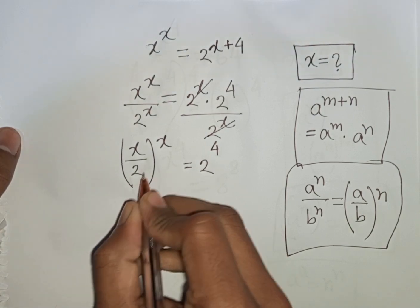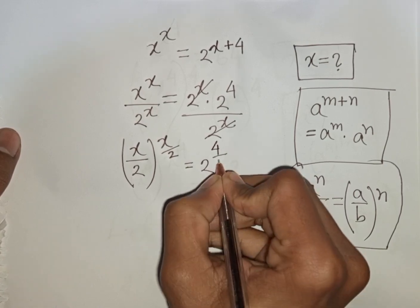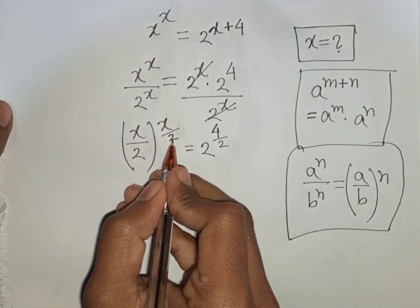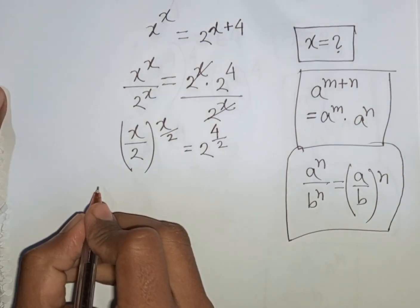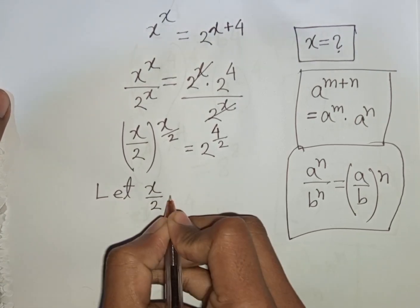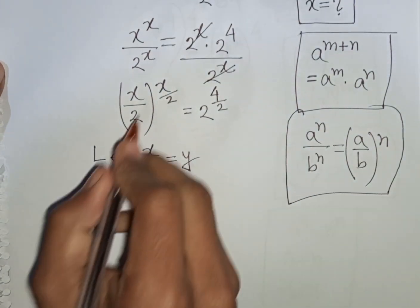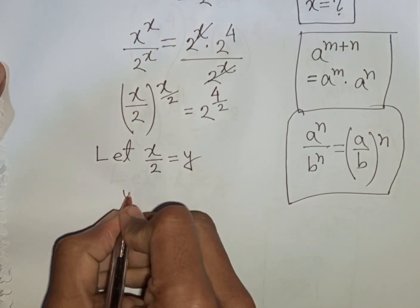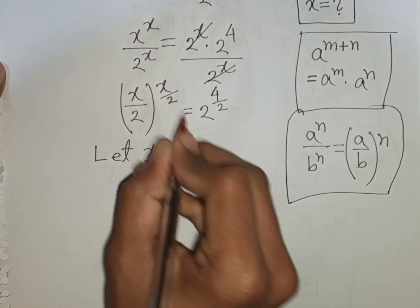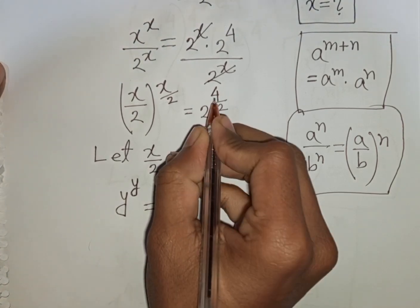Now, we divide by power of 2 on both sides. We see x by 2 and x by 2 — both terms are the same. So let x by 2 be substituted by y. Our equation will be y power y is equal to 2 power 4 divided by 2.